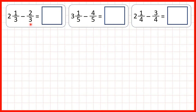Here we're still subtracting a fraction from a mixed number, but this time we can't subtract the fraction from the fraction in the mixed number. We have two and one-third, but we need to subtract two-thirds and there's only one-third in our mixed number.